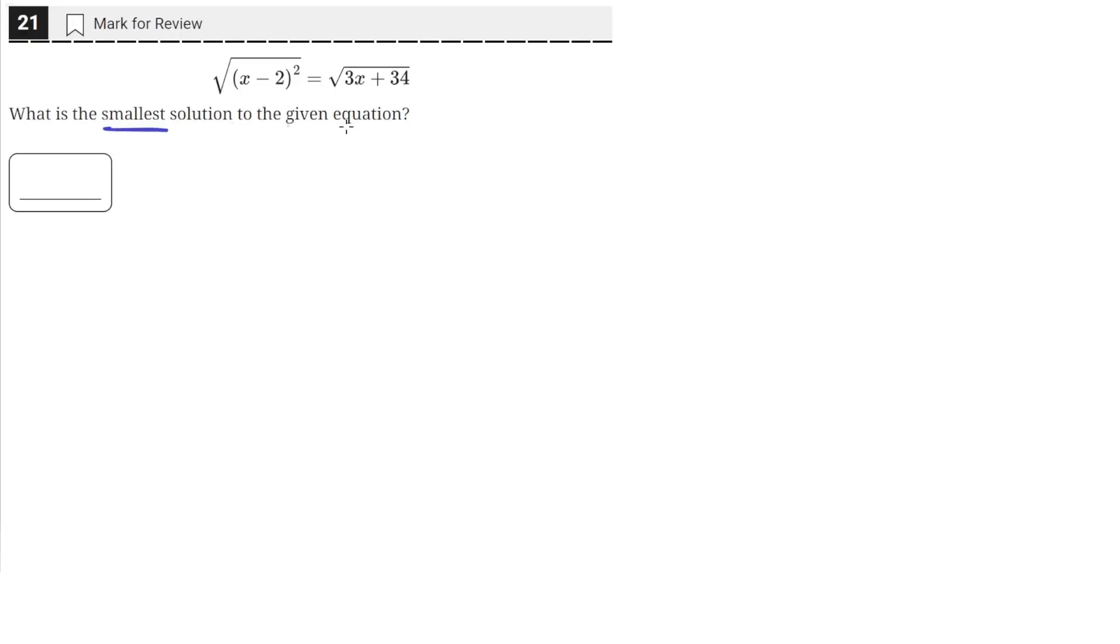What is the smallest solution to the given equation? So we have this equation here, and the first step we can do is to get rid of the square roots. And we can do that by squaring both sides.